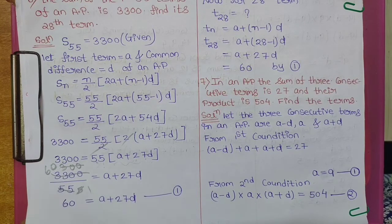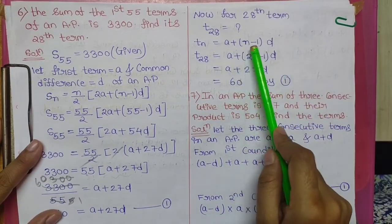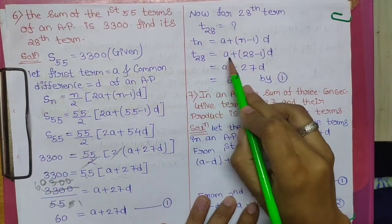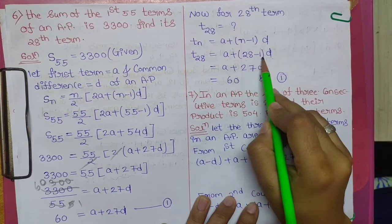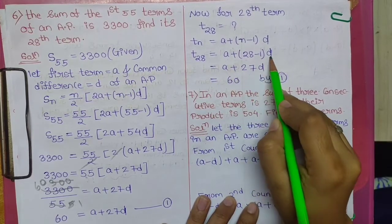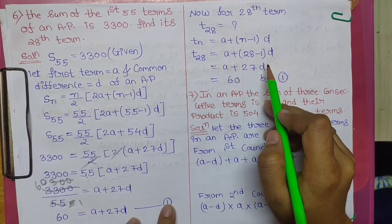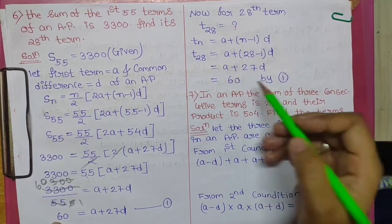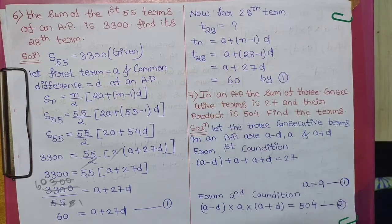Now use the formula for T28: TN = A + (N−1)D, so T28 = A + 27D. From Equation 1, A + 27D = 60. Therefore the value of T28 is 60.